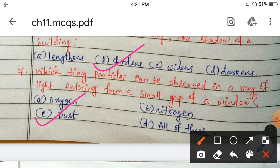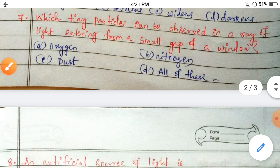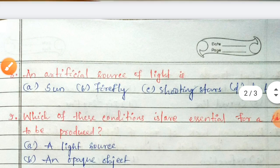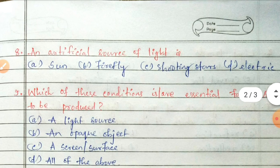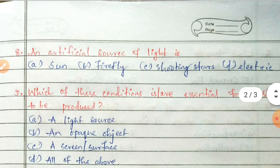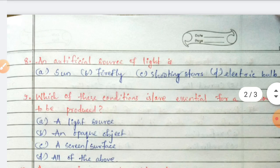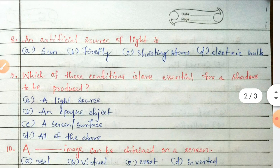Next, question number 8: an artificial source of light is — sun, firefly, shooting star, or electric bulb? The answer is electric bulb.